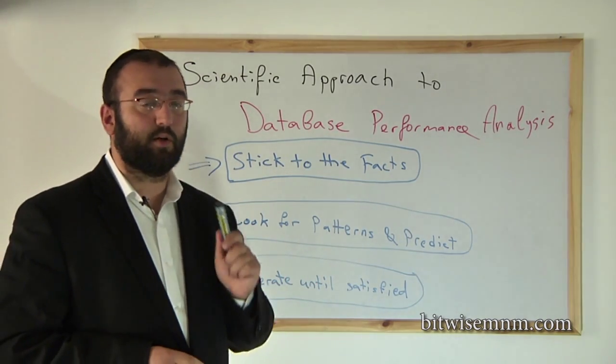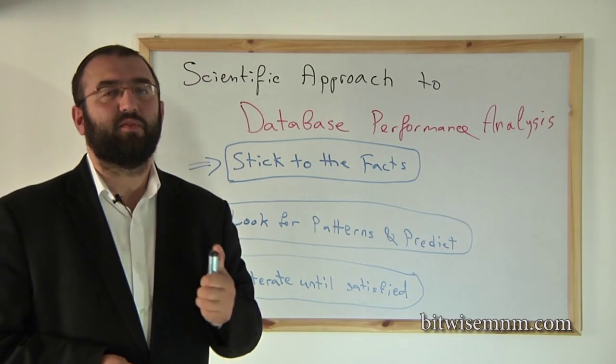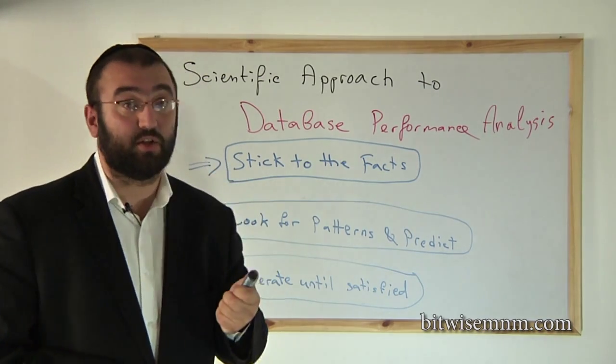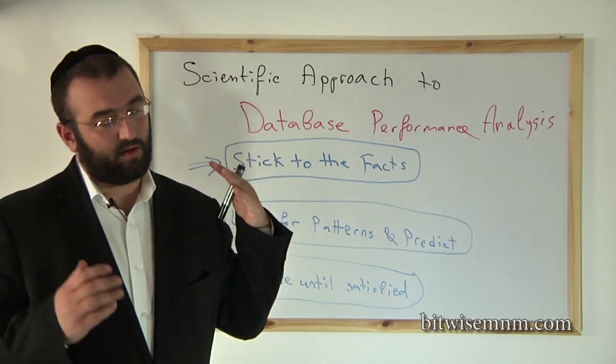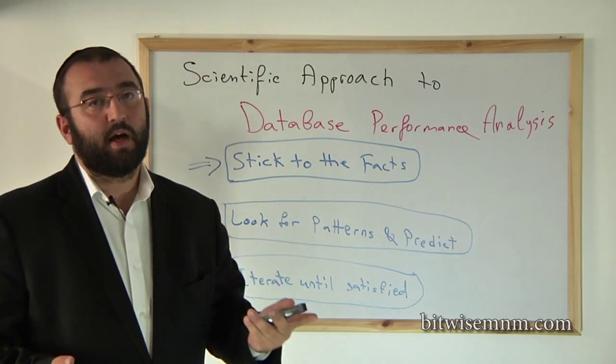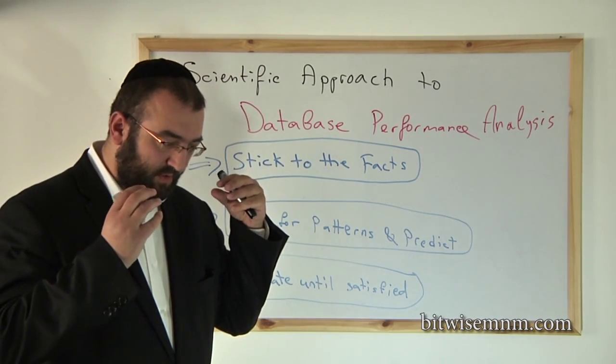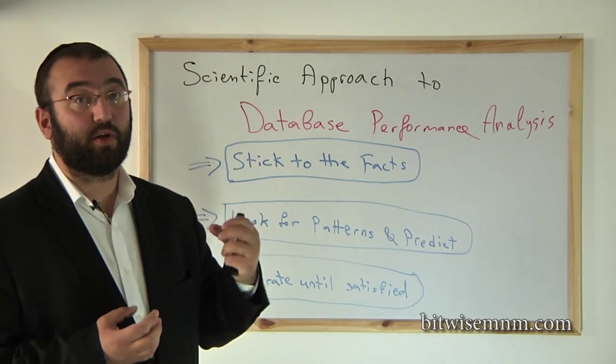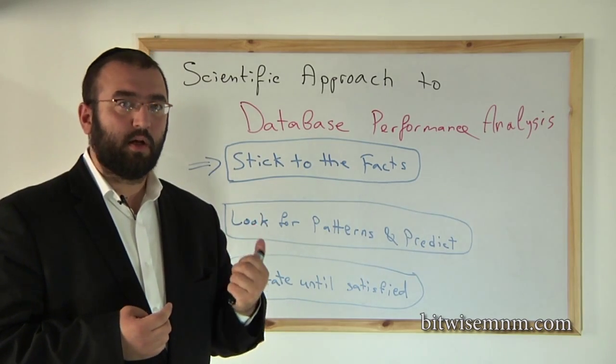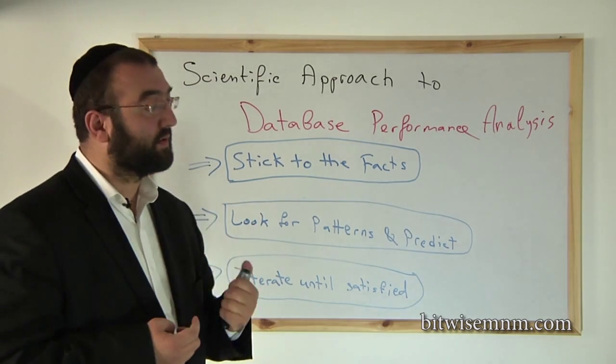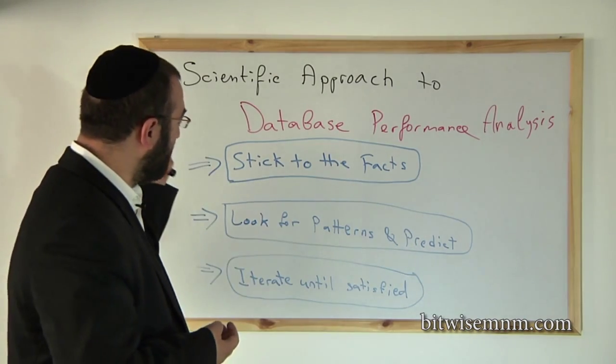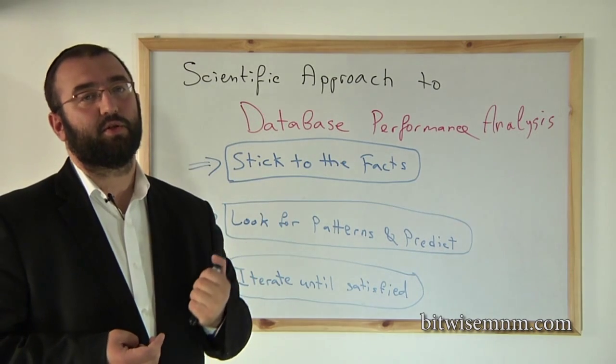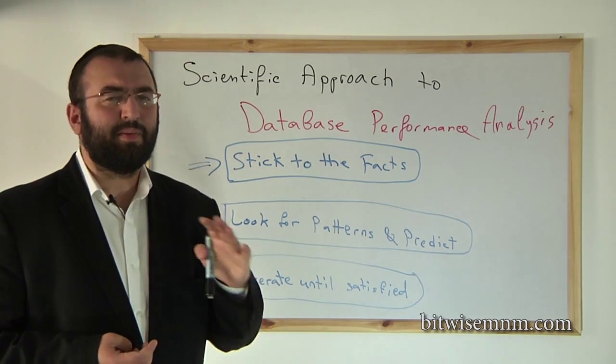We want a scientific approach to problem solving because that's what the scientific approach is for. You have essentially a lot of data that is more or less unorganized and you're going to try to discern patterns out of this and figure out what exactly went wrong and how you're going to fix it. So first and foremost, you need to stick to the facts. That is one of the foundations of the scientific method.